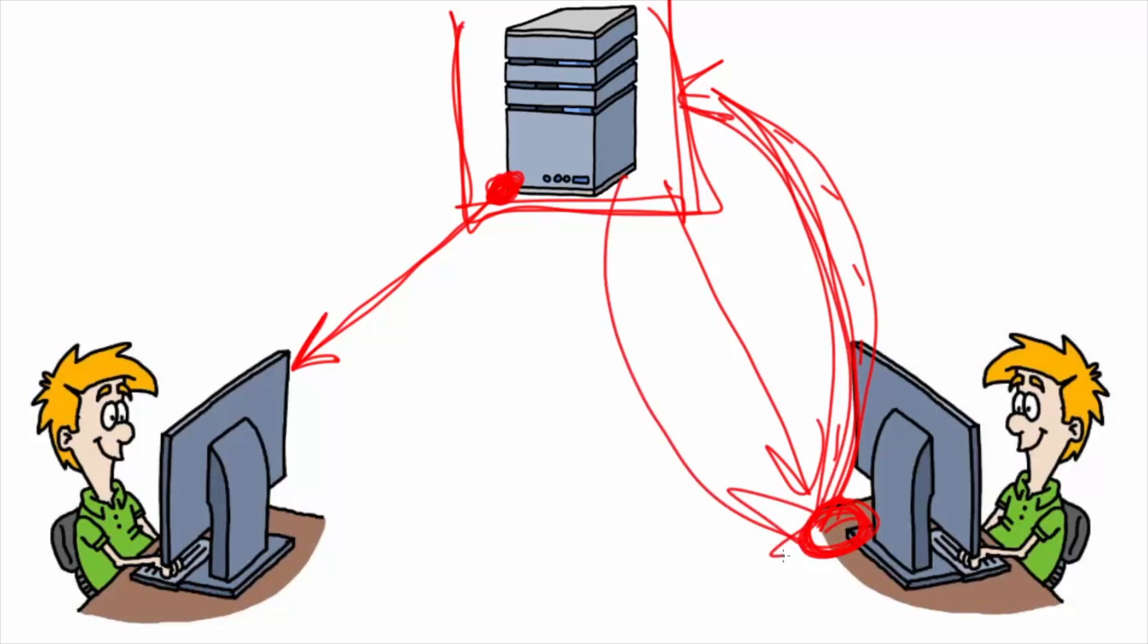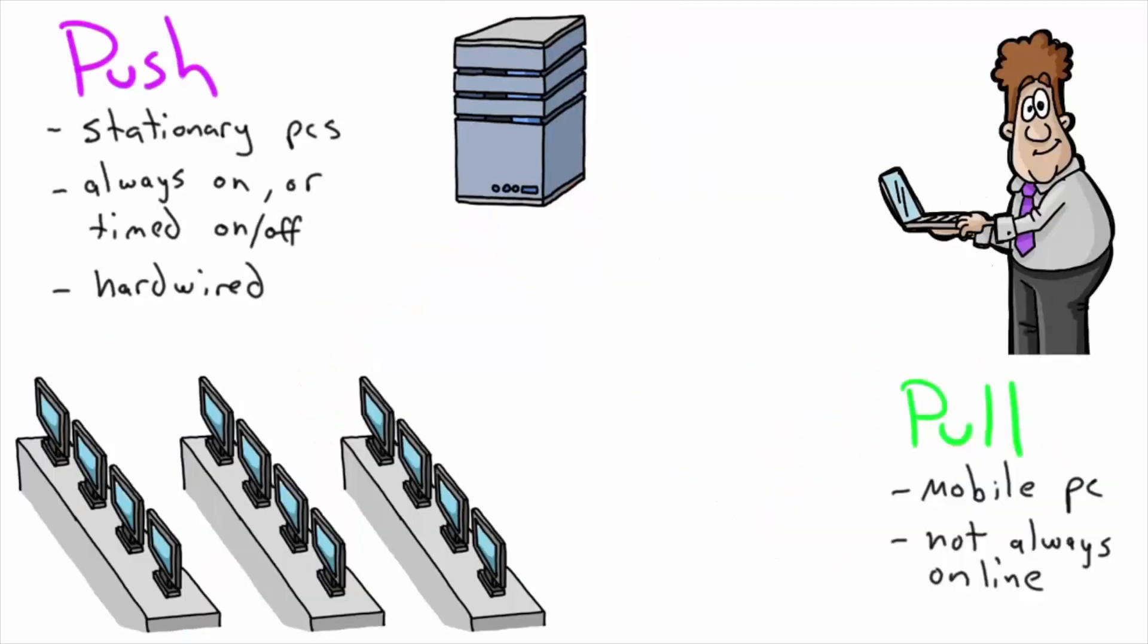Whereas in the push scenario, the server just says 'I have this stuff' and pushes it out to the client. So those are the two different ways that data and configurations can be sent or received from the client. The use cases make a lot of sense if you think about different kinds of computers.